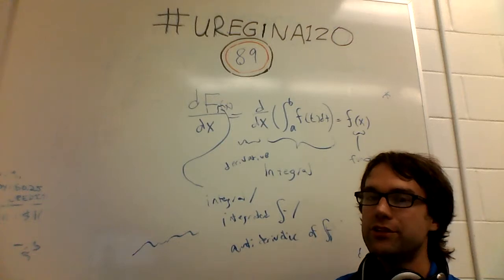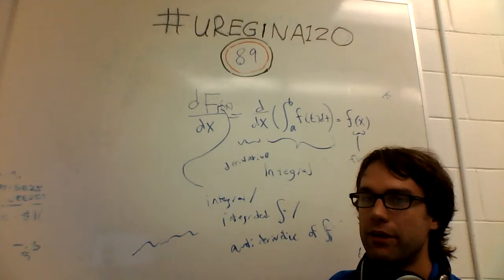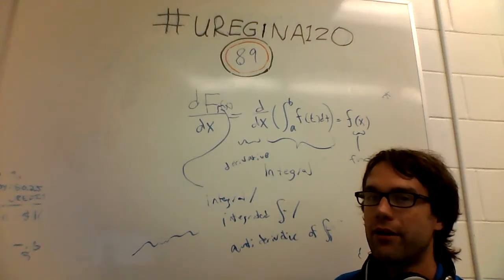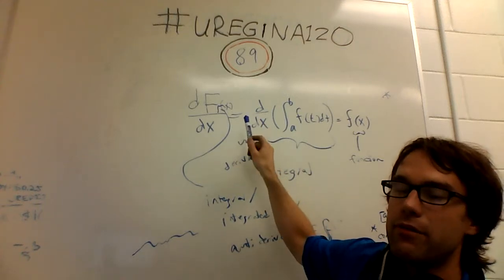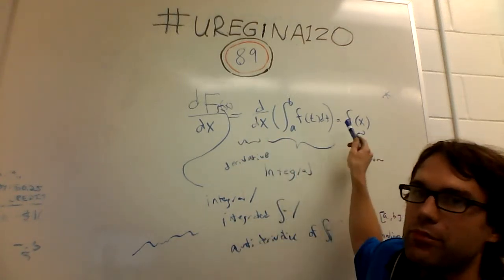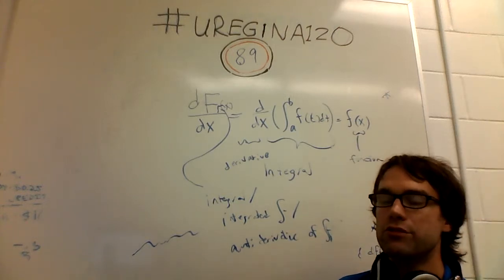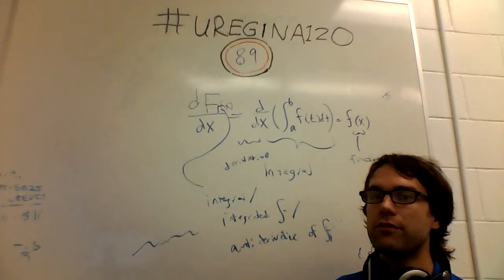So in other words, there is a relationship between derivatives and integrals such that they're kind of inverse of each other. If you take the derivative of something and then integrate it, you usually come back up with this as well.